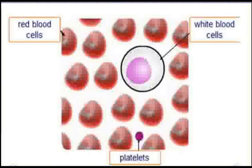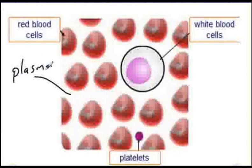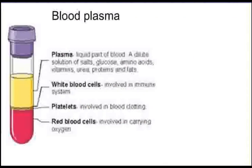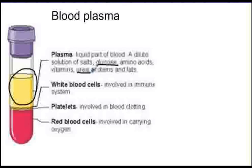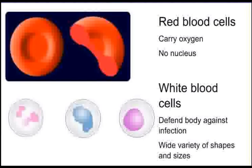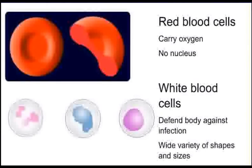Blood itself is made up mainly of plasma but also different types of cell. Plasma is liquid and is important as it has many substances that the blood transports dissolved straight into that plasma to be carried around. These include glucose, carbon dioxide and urea, which is a waste product. Oxygen is carried in red blood cells. These red blood cells are very small so they can fit through the tightest capillaries, and to save space and enable them to carry more oxygen they have no nucleus.